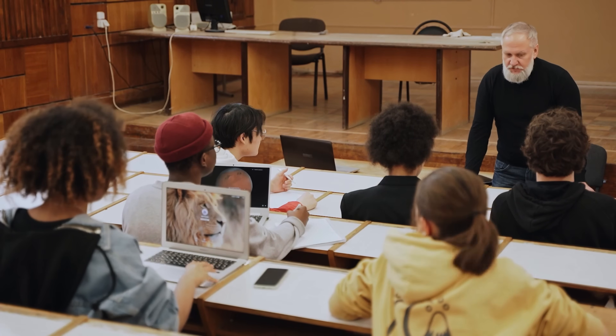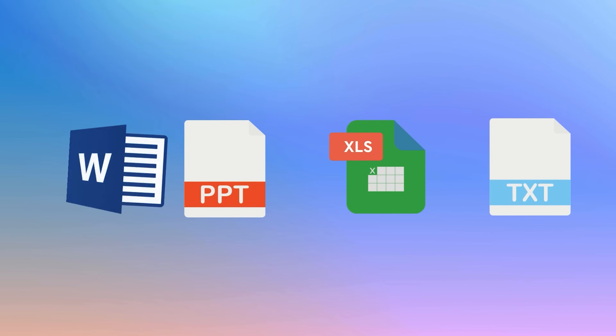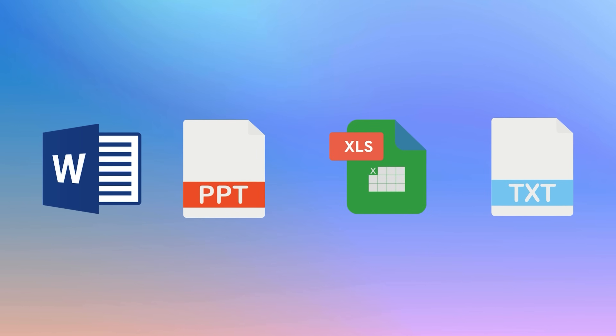Here's a classic student struggle: your professor gives you a PDF, but you need to actually do something with it — edit it, copy stuff, turn it into a presentation. You'll probably try converting it online and suddenly your layout is completely ruined, half the text is gone, and you're retyping everything at 3am. That's why you need to know about the convert feature in PDFelement. You can literally turn your PDF into a Word document, PowerPoint, Excel spreadsheet, or plain text, and it keeps your formatting intact.